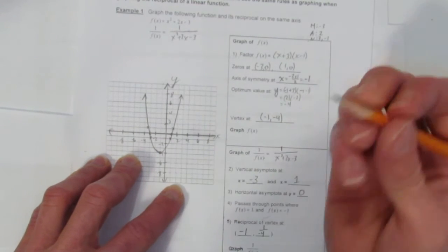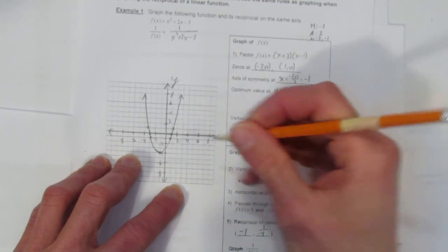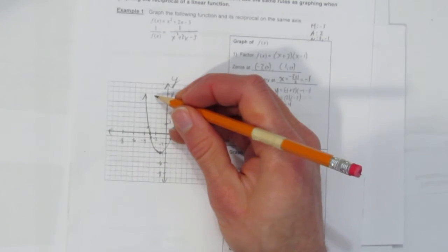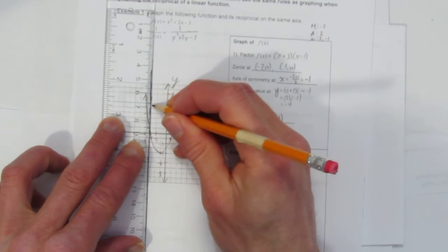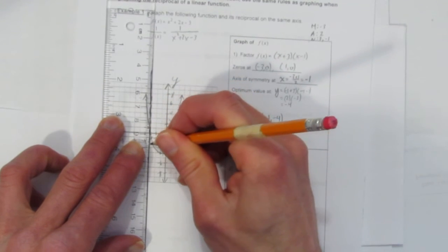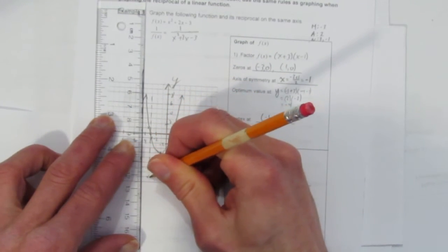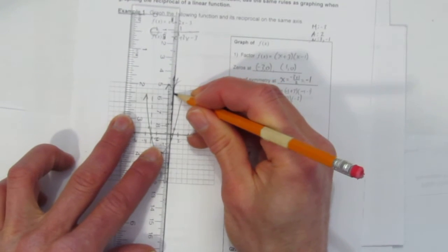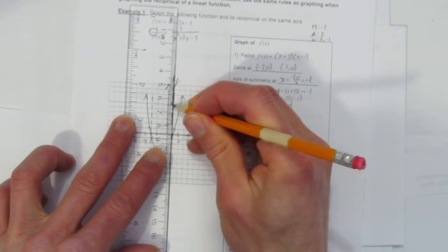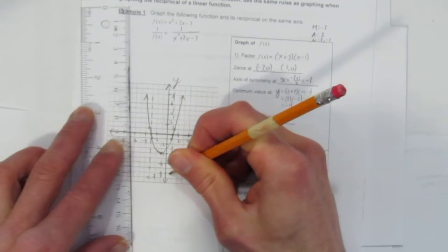Now we can graph the reciprocal. Let's start by putting this information on the graph. So we have a vertical asymptote at x = -3. And we have another vertical asymptote at x = 1.